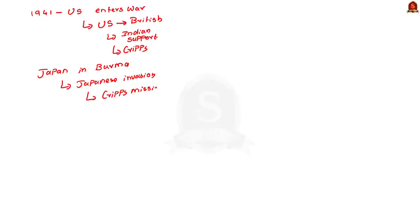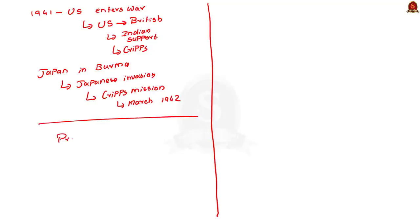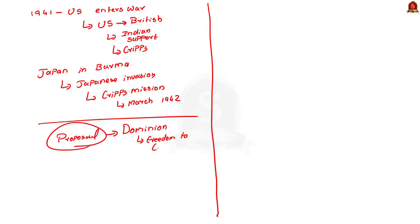Due to these reasons, the Cripps Mission was sent to India in March 1942. The most important proposal of the Cripps Mission was the setting up of an Indian Dominion. The mission also proposed that the Dominion would have the freedom to remain with the British Commonwealth or to secede from it. The Indian Dominion would also be at liberty to take part in international organizations.